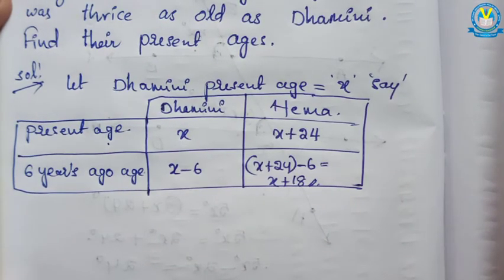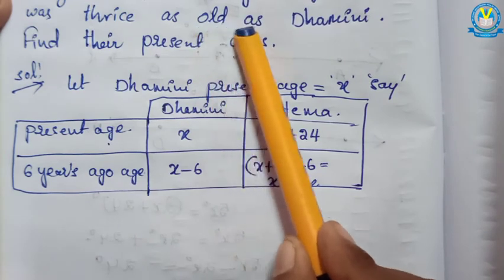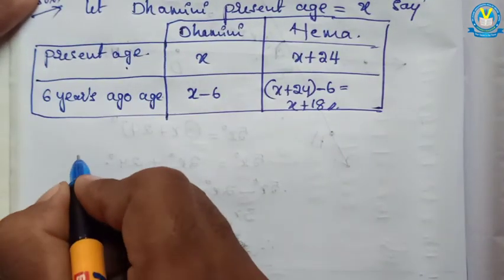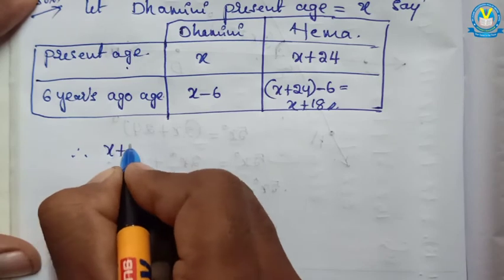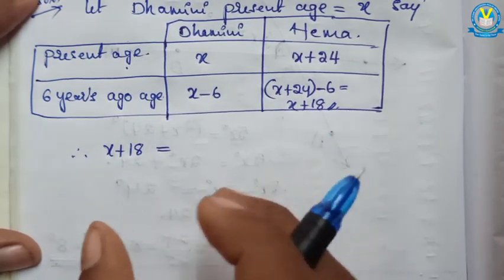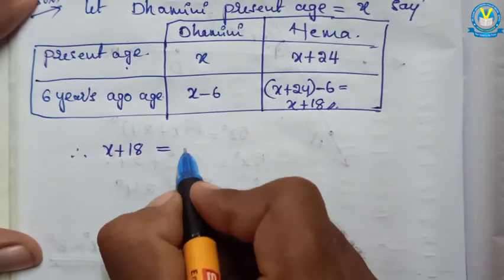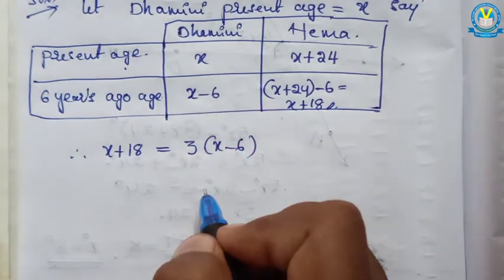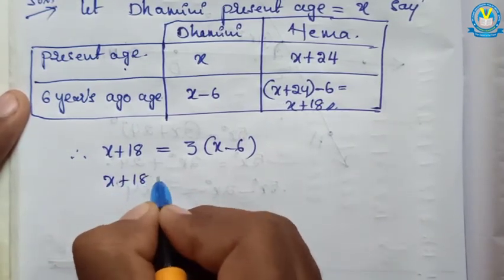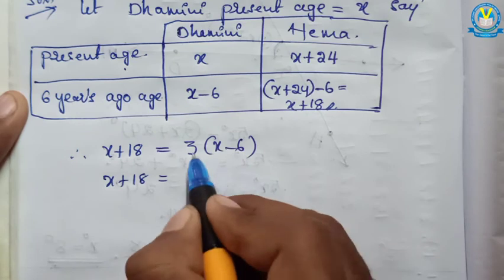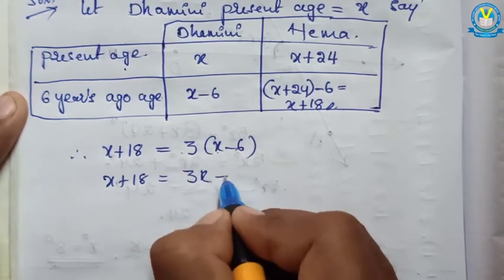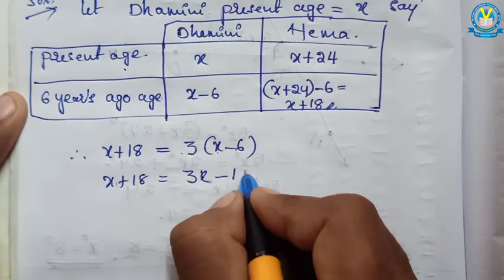But here given one condition: Hama was thrice as old as Domini. Thrice means into 3 — triple. So Hama's age 6 years ago, x plus 18, is equal to thrice Domini's age 6 years ago, that is 3 into (x minus 6). So x plus 18 equal to 3 into x minus 6. 3 multiplies both the variables: 3 into x gives 3x, plus into minus gives minus 3 into 6 gives 18. So x plus 18 equal to 3x minus 18.